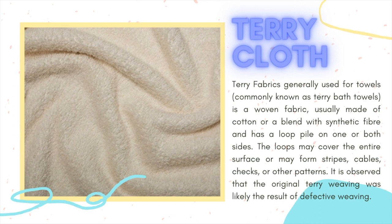Warp knitted terry cloth is manufactured in a rational warp knitting machine using three sets of warp yarns. Yarns used in terry cloth are valued for high absorbency, high wet strength, ability to dye well, good color fastness, washability, soft hand, hypoallergenic properties, low cost, and easy availability. Cotton is generally used as pile yarn in warp knitted terry cloth because of its excellent absorbency.